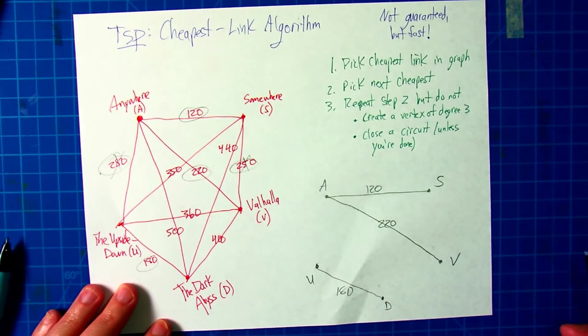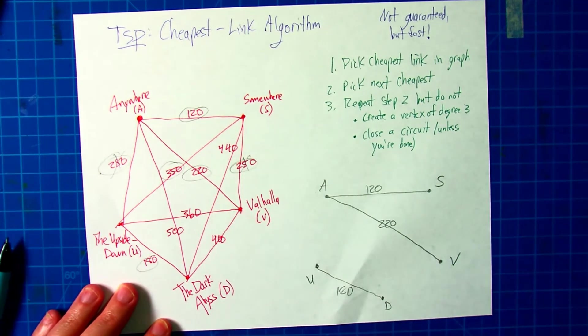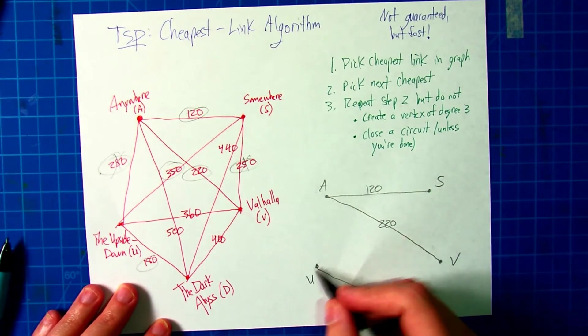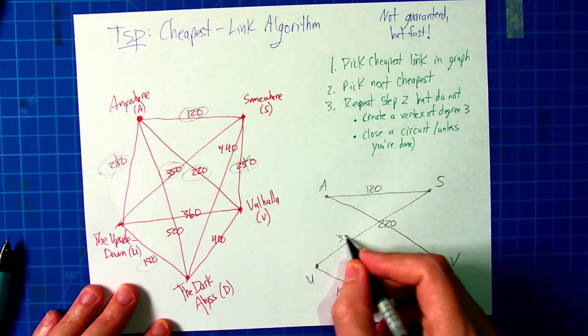We're running along on possibilities, so how about this 350 from somewhere to the upside down? That one looks fine. If we go here, we won't create a vertex of degree three or close the circuit, so we can add that one in at 350.